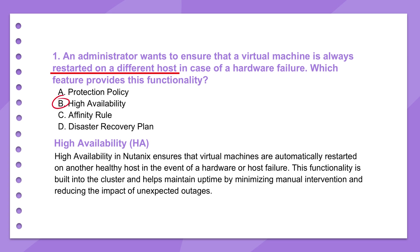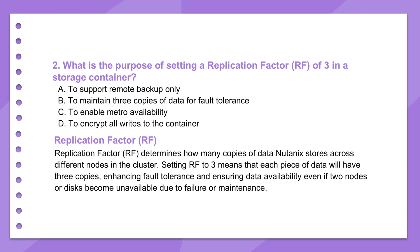There's another question about setting replication factor RF, specifically RF3. RF of three means every chunk of data written gets stored in three separate places across the cluster. NDFS is smart about placing those copies across different nodes and different storage blocks, providing significant fault tolerance. With RF3, the cluster can handle up to two component failures simultaneously — could be drives or even whole nodes — without losing data or access. The trade-off is that RF3 means using three times the raw space, so it's a design choice based on how critical the data is.